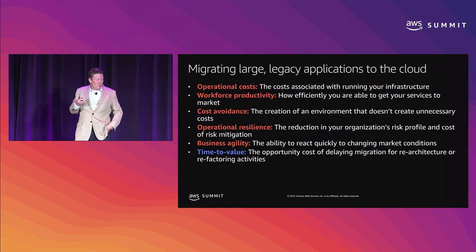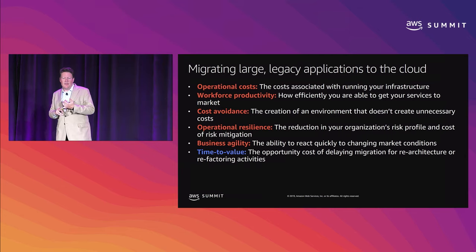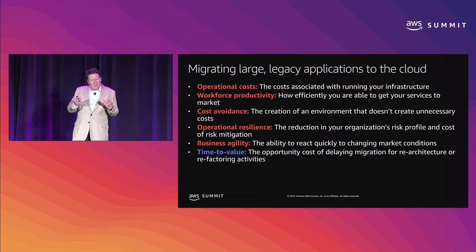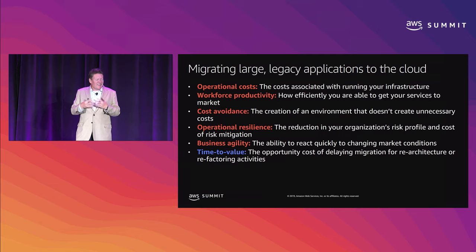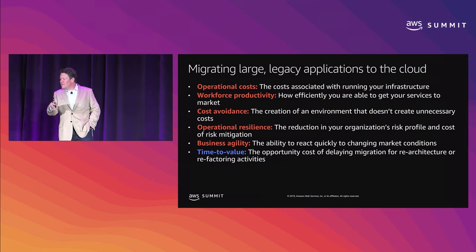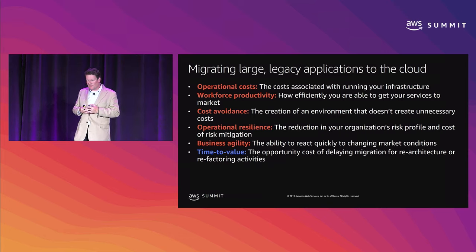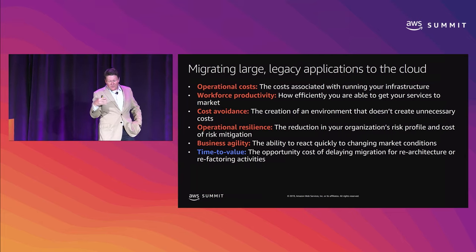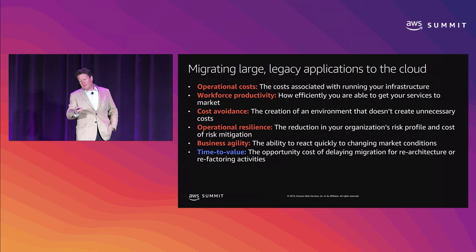Back to those harder to quantify: what is your real workforce productivity today — in lines of code or other metrics about your development and operations staff? What's your hypothesis about how you'll positively influence those as you move to the cloud? Similarly for agility — what's the mean time between recognizing a market opportunity and getting that capability into the market? We're adding a sixth metric not in the white paper: the opportunity cost of the time it's going to take to get the workload to the cloud. Different patterns vary significantly on that axis.